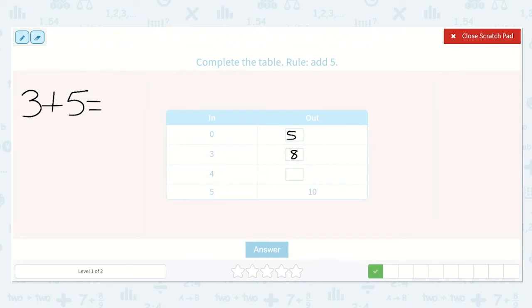What about four? If we put four in, and then we add five. Well, I know three plus five was eight, so four plus five is one more than that, which is nine. And then five plus five is ten.